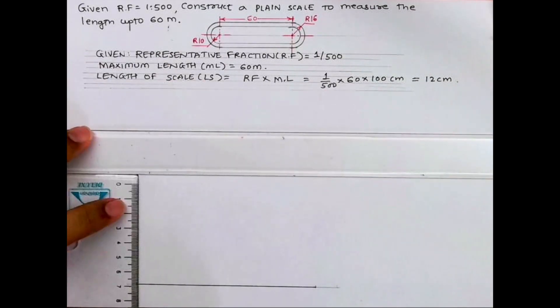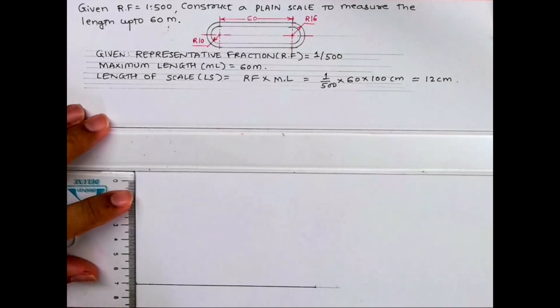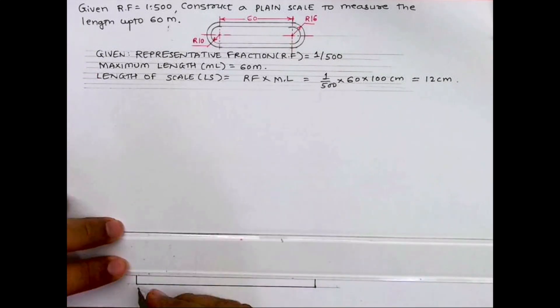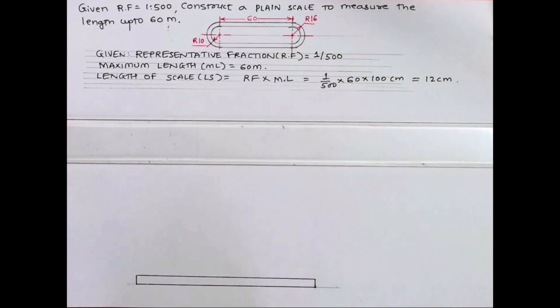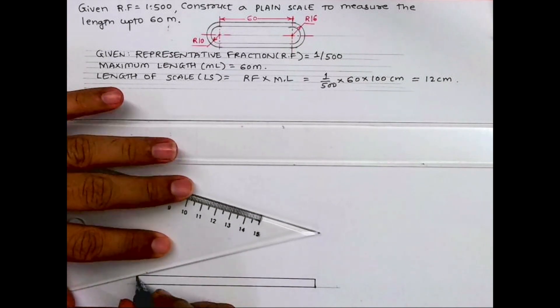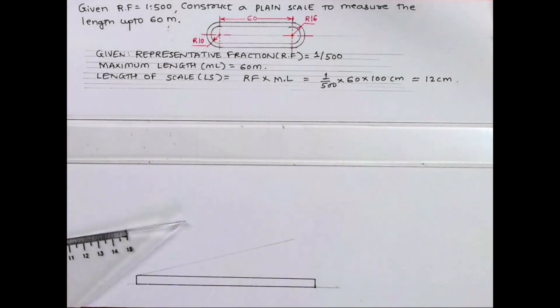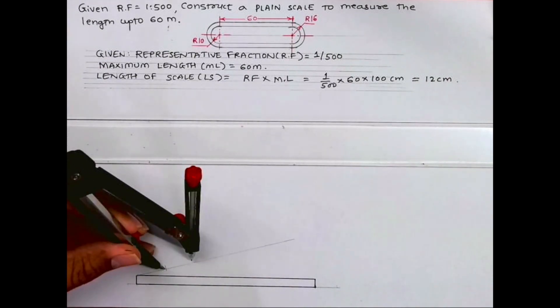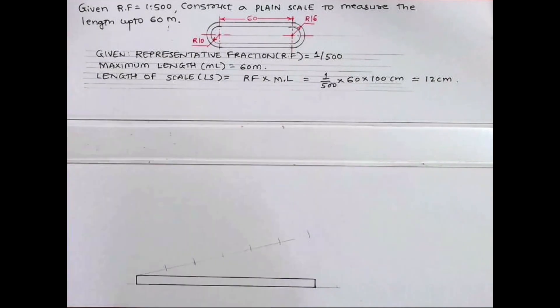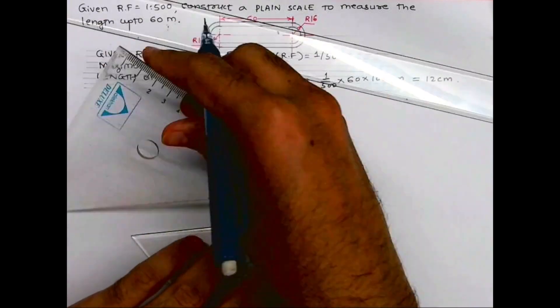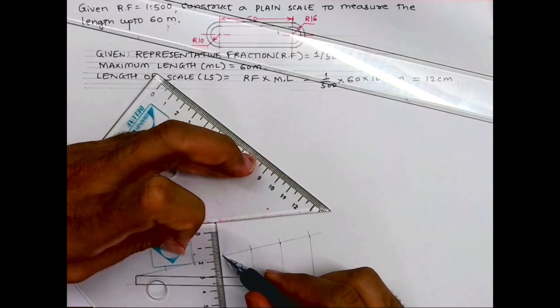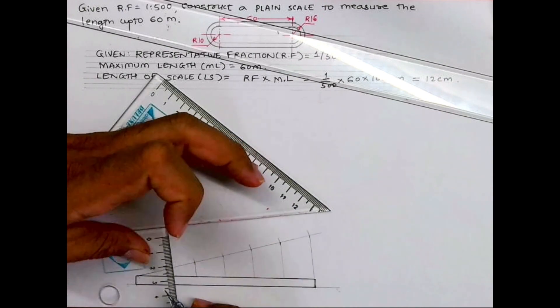Then we'll take height 5 millimeters and draw one rectangle. We need to divide this into six parts because maximum length is 60 meters. We'll draw any angle and divide it into six parts. Drawing parallel lines, we have divided the 12 centimeter line into six parts.